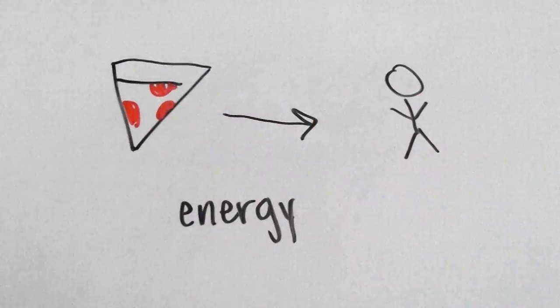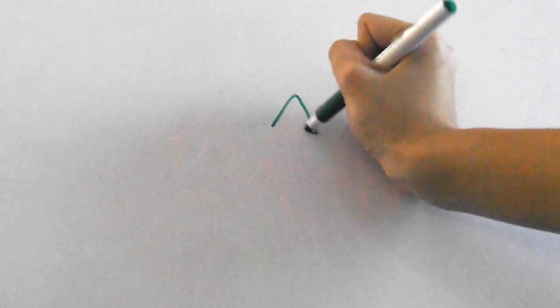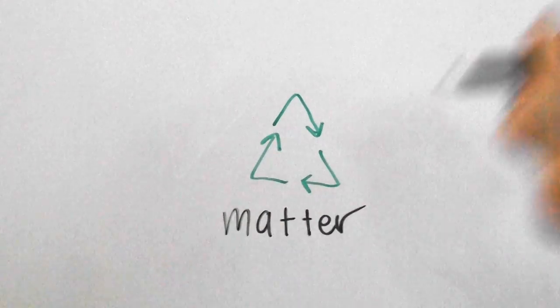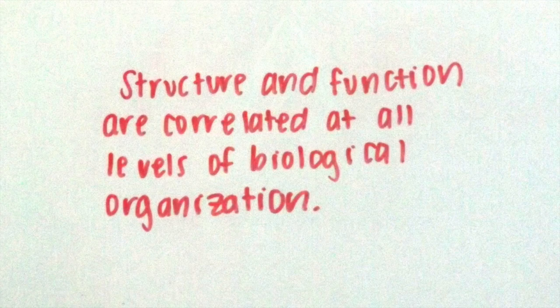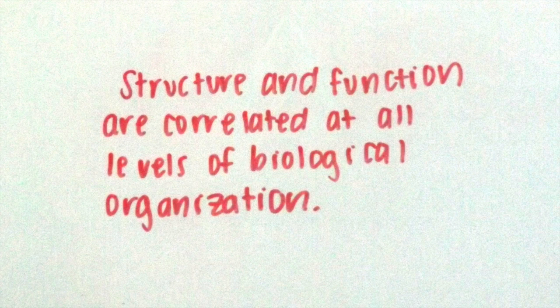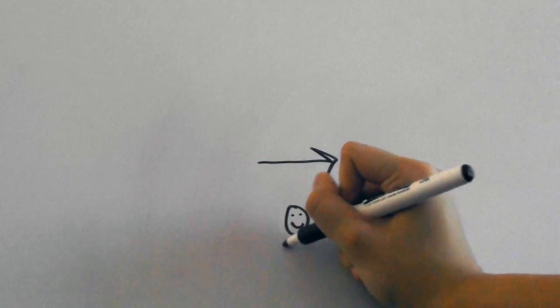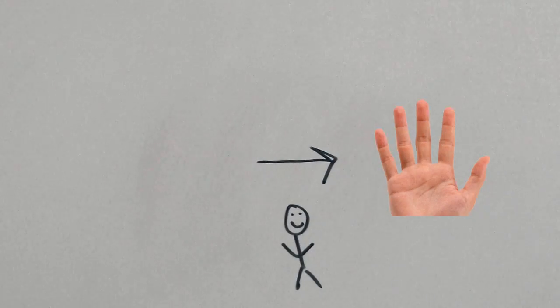The next theme is huge in biology. It describes the relationship of structure and function which are correlated at all levels of biological organization. You will see the term structure and function over and over again in your course. For example, the structure of a glove is the shape of a hand and its function is for the person to wear the glove so his or her hand can be protected.